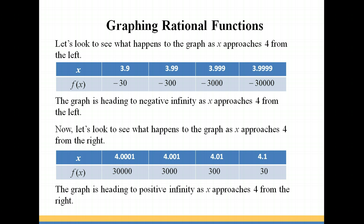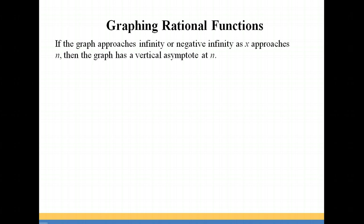When your graph is heading toward infinity or negative infinity as x approaches a certain number, you're going to have a vertical asymptote at that number. So in this case, since we're going to infinity on one side and negative infinity on the other side, our graph is heading toward infinity. So that means that we have a vertical asymptote at x equals 4.